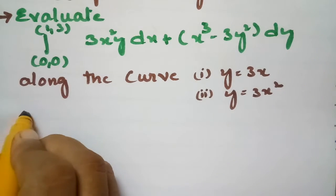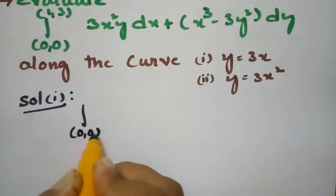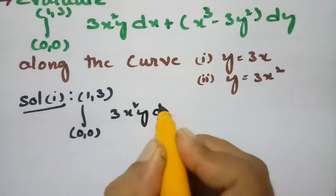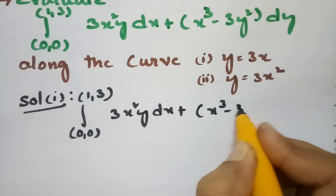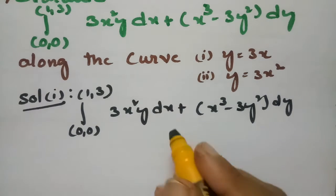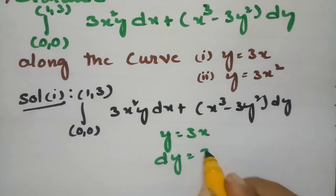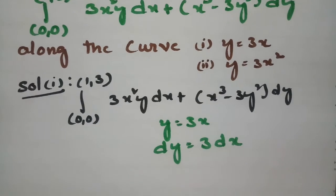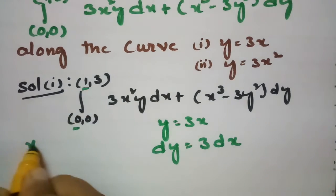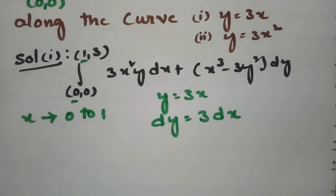First of all, we are going to solve Solution 1. We are going to evaluate the integral from (0,0) to (1,3) of 3x²y dx plus x³ minus 3y² dy. I am going to choose the curve y = 3x, and obviously dy will be 3 times dx. So I am going to transform this integral in terms of x, where x varies from 0 to 1.